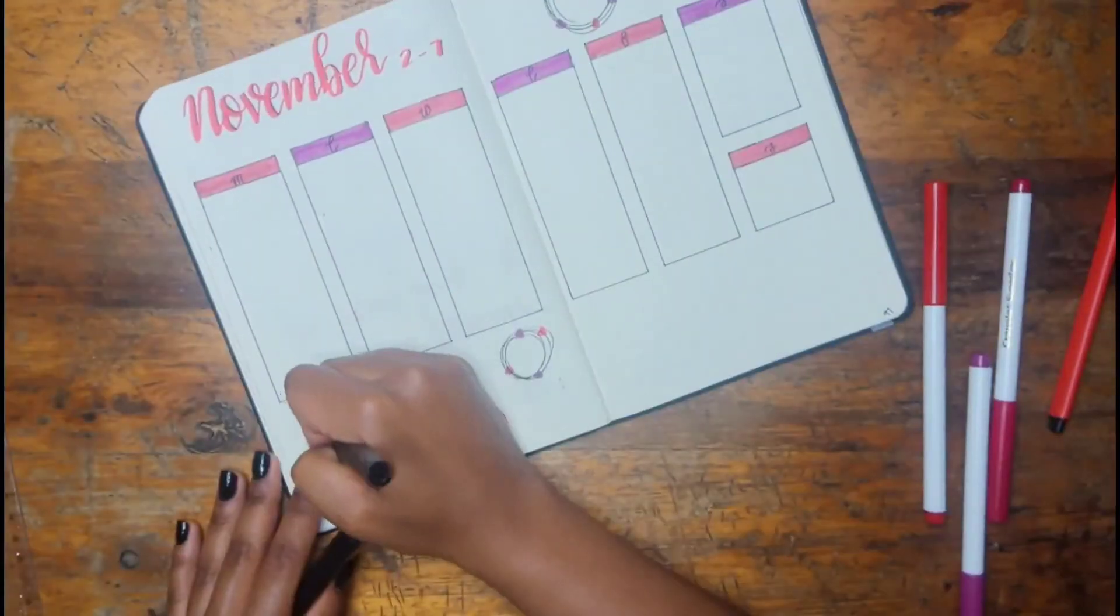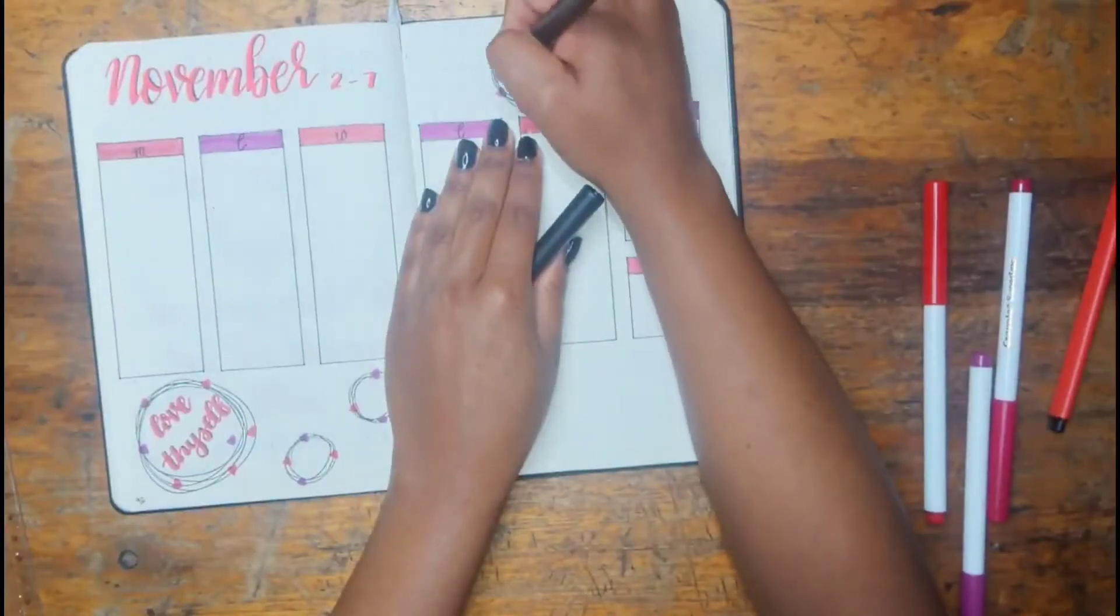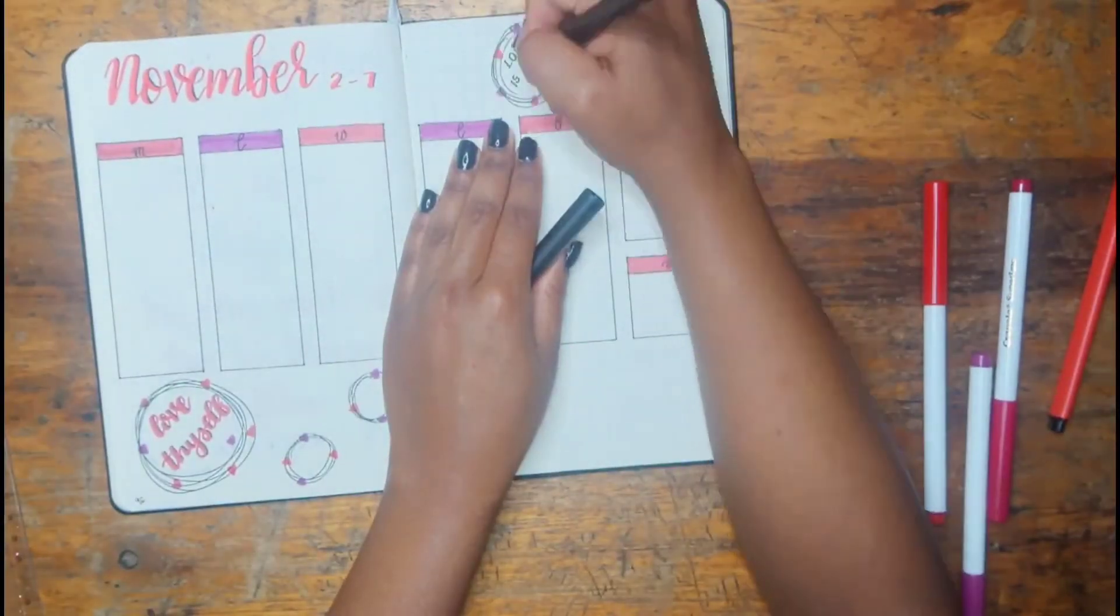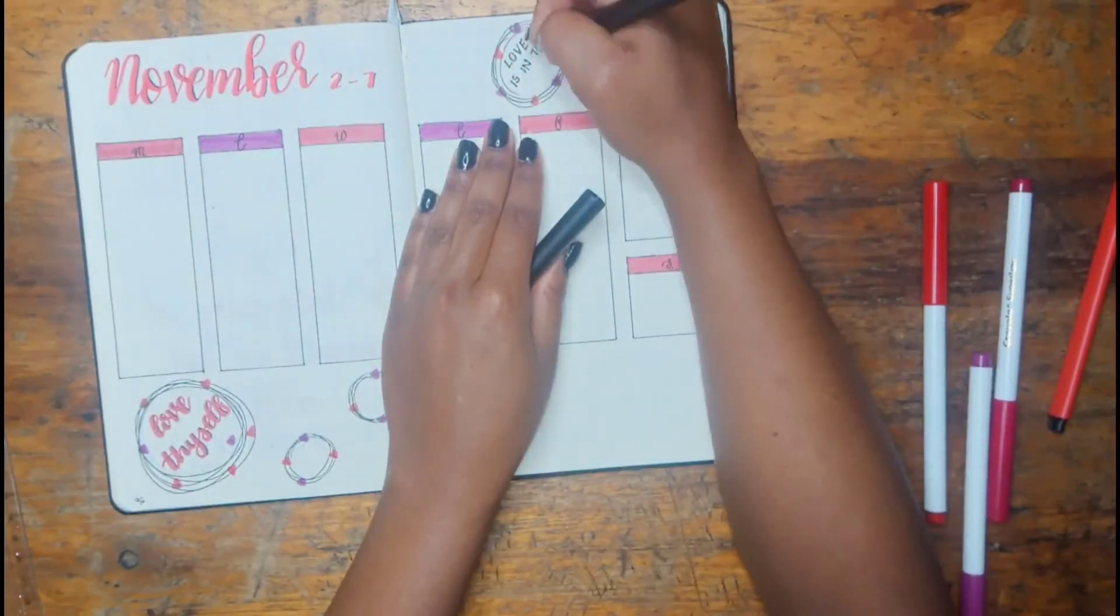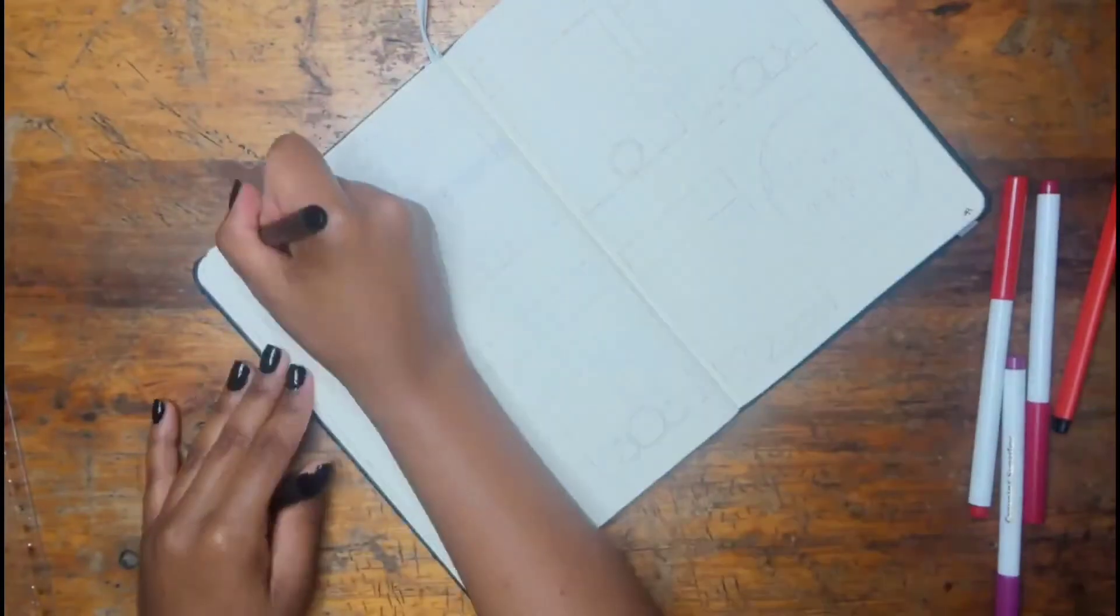A little mini quote there on the bottom that says 'Love thyself' and a little mini quote again at the top which says 'Love is in the air.' I'm telling you guys, I'm vibing with myself so much that I needed all these quotes. I just couldn't pick one so I had to incorporate all of them throughout the spreads.